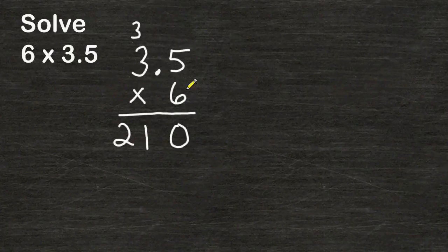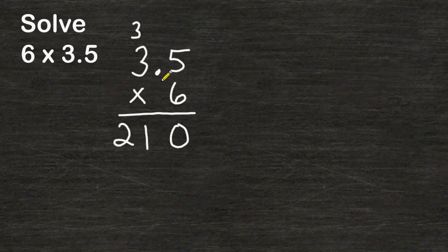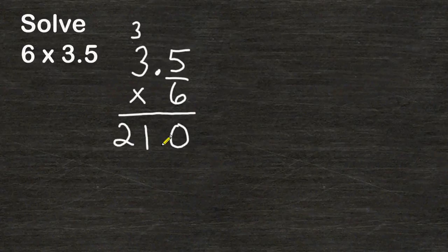Now, if you have a decimal inside the problem, you have to have a decimal in your answer. So if we take a look at this decimal right here, we can see that there is a total of one place value after that decimal. That means that in our answer, we also must have a total of one place value after the decimal. So our decimal must go in this location.